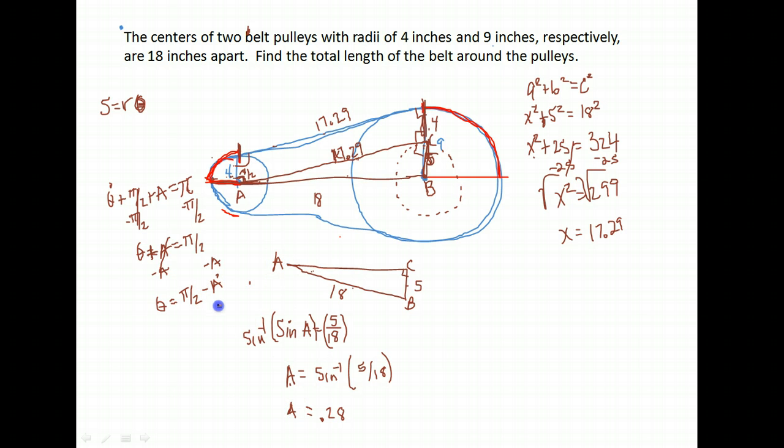So my angle A is 0.28, which means my angle θ is π/2 minus 0.28. So calculate that. π divided by 2 is 1.57 minus 0.28 gives me 1.29 radians.